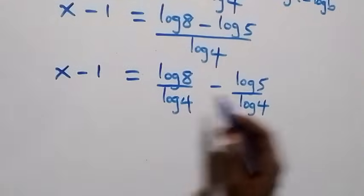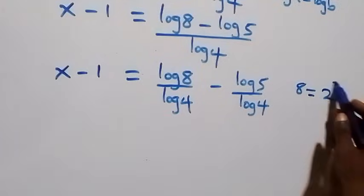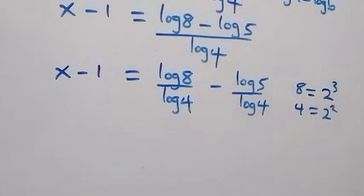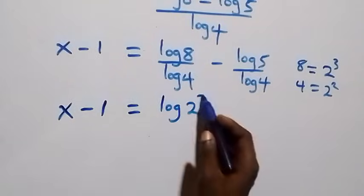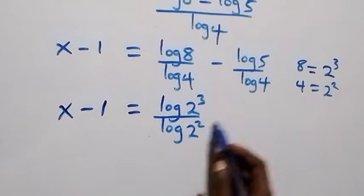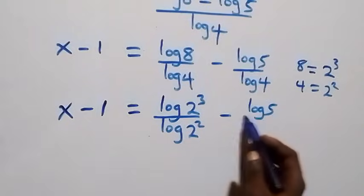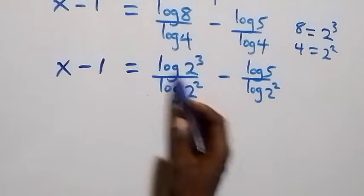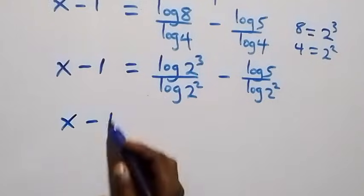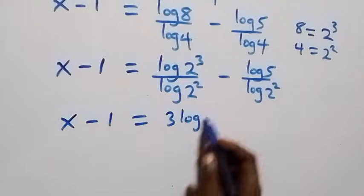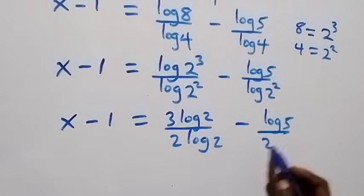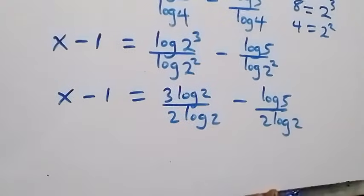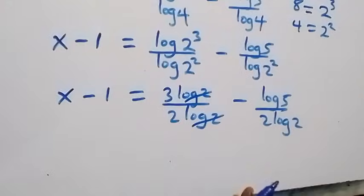Then next step, we can express 8 as 2 times 2 times 2, which is 2 raised to power 3, and 4 as 2 times 2, which is 2 squared. Then this becomes x minus 1 equals log(2 raised to power 3) over log(2 squared), then minus log 5 over log(2 squared). We apply the power rule of logarithm — the power comes down — and we have x minus 1 equals 3 log 2 over 2 log 2, then minus log 5 over 2 log 2. The log 2s cancel, leaving 3 over 2.